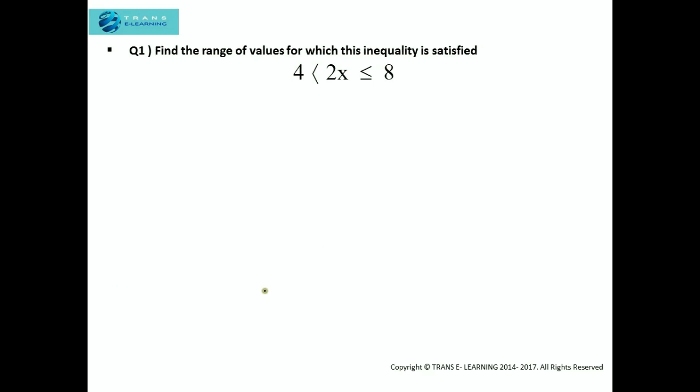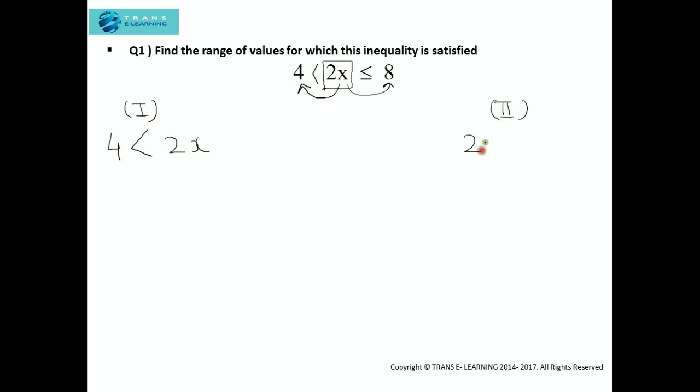The first question: find the range of values for which this inequality is satisfied. This is a compound inequality in which 2x is the middle term. We will split this inequality into two parts. The first part consists of the middle term and the left-hand side value, giving us 4 is less than 2x, and the second part is 2x is less than or equal to 8.